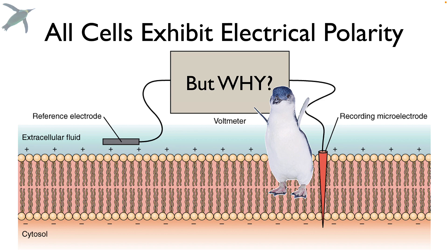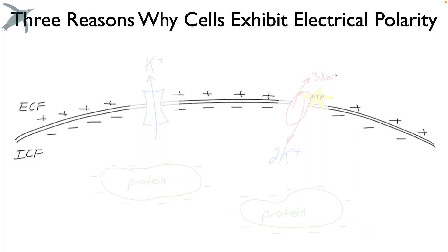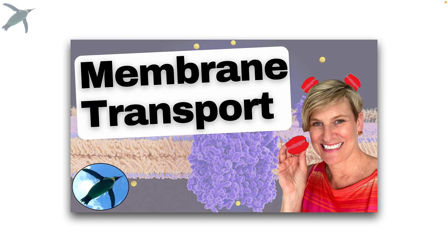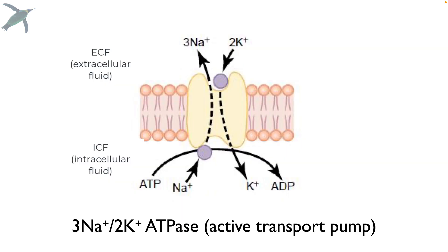And I really hope you're wondering why. There are three reasons why this electrical polarity exists. The first is the three sodium, two potassium ATPase. Now, this is an active transport pump. And if you're not familiar with the concept of active transport, please check out this video on membrane transport. What this pump does is pump three ions of sodium from the inside to the outside of the cell against its gradient as it pumps two ions of potassium from the outside to the inside of the cell against its gradient. It takes ATP to do this.